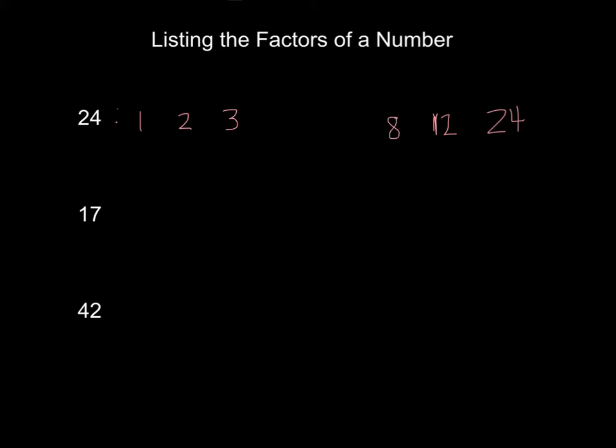3 times what gives me 24? Well, 3 times 8. So 3 and 8 are both factors of 24, and we go to 4. Is 4 a factor of 24? Yes it is. 4 times what gives me 24? Well, 4 times 6.